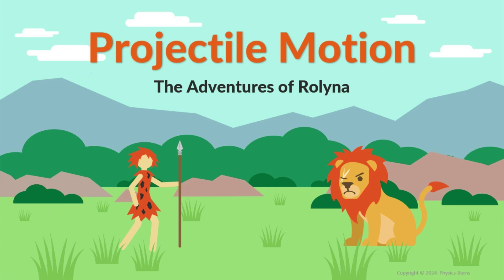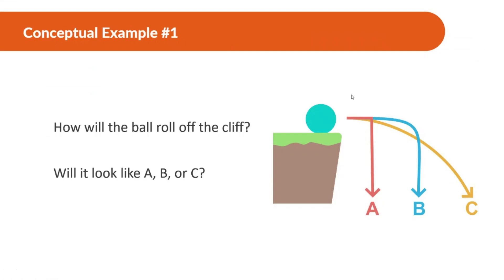Welcome to Conceptual Physics Projectile Motion: Adventures of Rolina. Let's think about what projectile motion is with an example. How will a ball roll off a cliff? Will it look like A, B, or C? We have this ball with some motion, and we're thinking about how it looks when it rolls off.